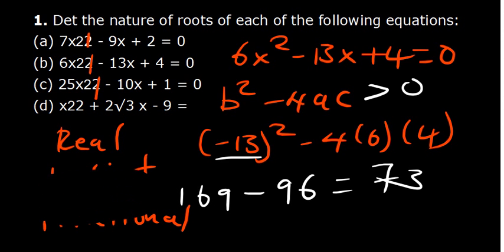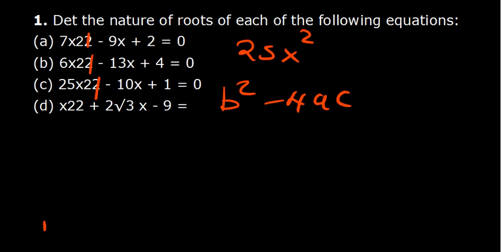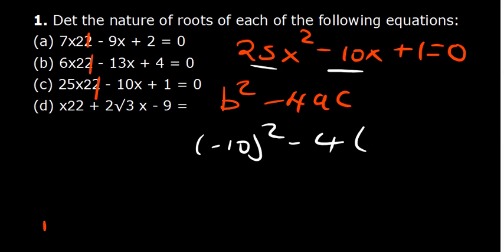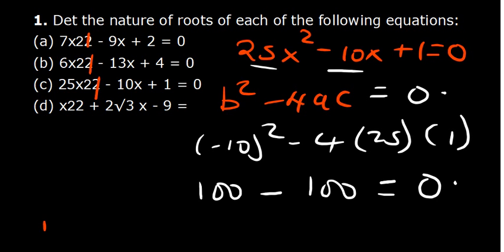For the third equation, 25x squared minus 10x plus 1 equals 0. Here b is negative 10, a is 25, and c is 1. So b squared minus 4ac: 10 squared is 100, and 4 times 25 times 1 is also 100. We get 100 minus 100 equals 0. Since the discriminant equals 0, the roots are real and equal.